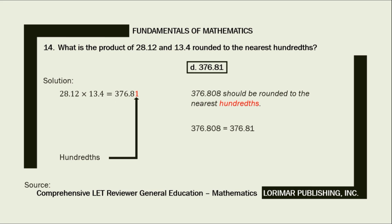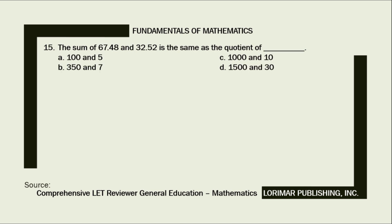Problem number 15. The sum of 67.48 and 32.52 is the same as the quotient of blank. A. 100 and 5. B. 350 and 7. C. 1000 and 10. D. 1500 and 30.